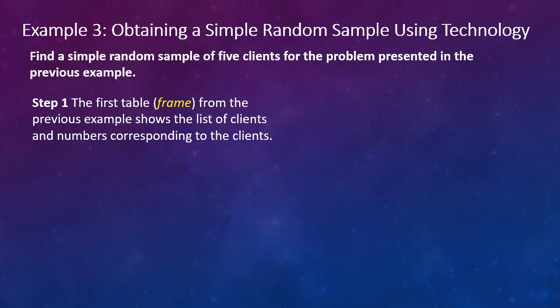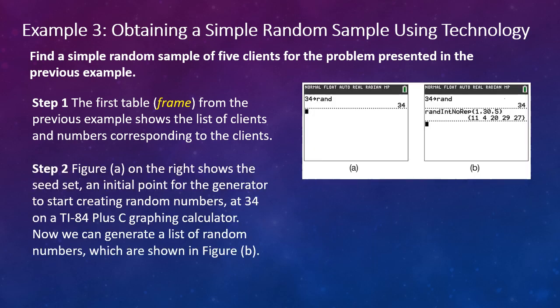So in Example 3, we're going to use technology to find a simple random sample, and this is the way it normally occurs. It's rare for people to use random tables, but it does happen. So we're going to find a simple random sample of five clients for the problem presented in the previous example. So we're trying to select five out of—I think 20 different companies. So we're going to use the same frame. Step 1 is to create the frame. We already did that in an Example 2 that lists the numbers from 01 to 30—actually it was 30 clients.